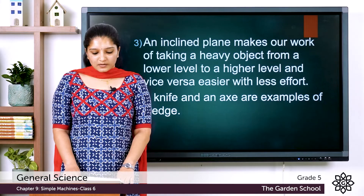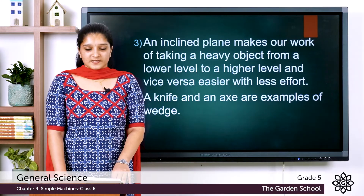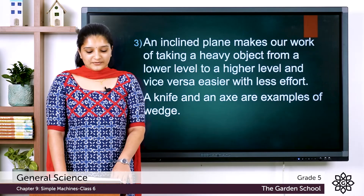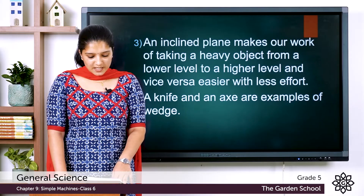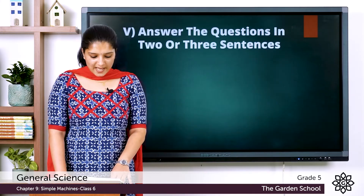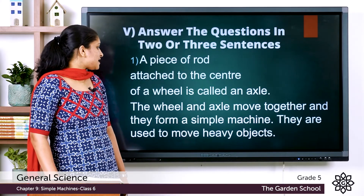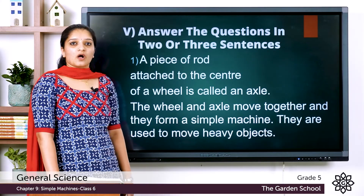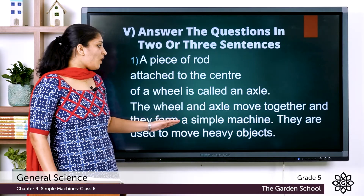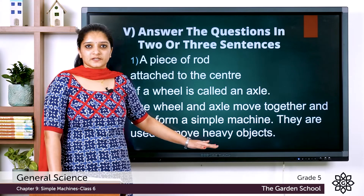That was all about answering the questions in one sentence. Now let's move into the next set of questions — to answer the questions in two or three sentences. The first question is to draw and describe a wheel and axle. The answer is: a piece of rod attached to the center of a wheel is called an axle. The wheel and axle move together and they form a simple machine. They are used to move heavy objects.